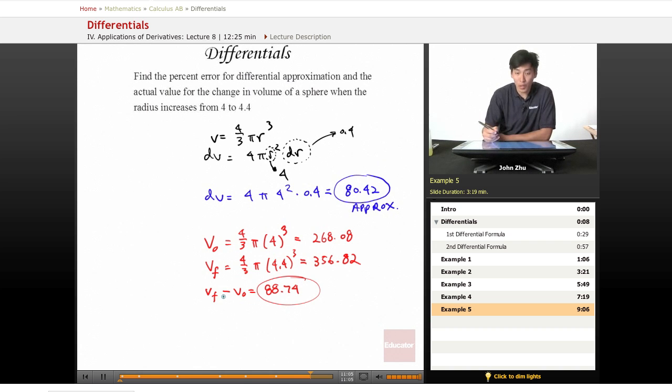This is kind of close to the approximation, but let's find the exact percent error. The percent error formula is 100% times the absolute value of (actual minus approximation) over the actual.